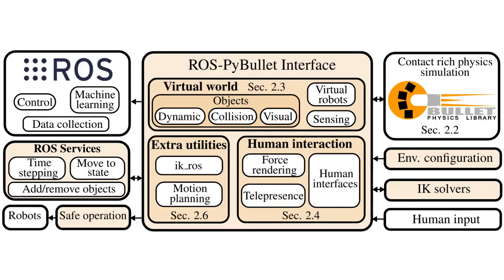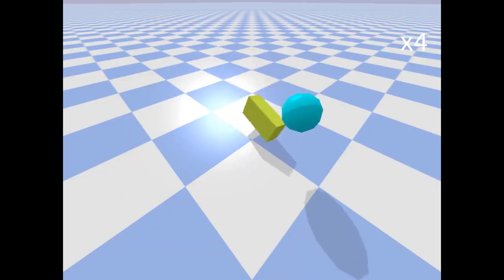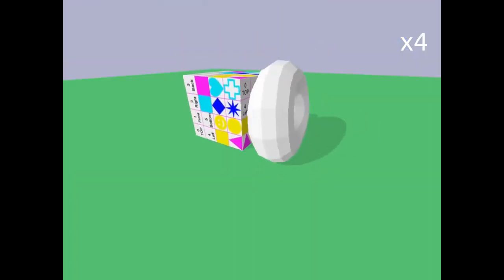We present the ROS-PyBullet interface, a framework that provides an interface between the robot operating system and PyBullet. PyBullet is a reliable simulator for contact-rich scenarios, whereas ROS provides middleware communication facilities and many readily available software libraries and packages for machine learning, control, and others. The framework includes full physics simulation utilizing PyBullet's capabilities.